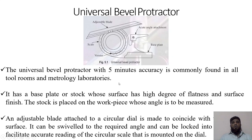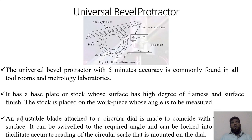The universal dual protractor — 'dual' here refers to the angle — has a flat base surface. You keep a surface on it and rotate so that the blade is aligned to the surface being measured. The universal protractor has five minute accuracy; one degree is divided into 60 minutes, so you can measure down to five minutes. It has a base plate whose surface must have a high degree of flatness and surface finish.